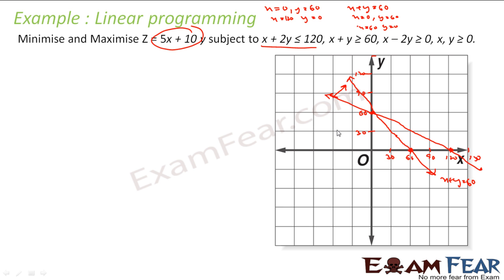Now, whether the region is on this side or that side: put (0, 0). For x + 2y ≤ 120, (0, 0) satisfies since 0 < 120. But for x + y ≤ 60, (0, 0) gives 0 + 0 = 0 which is less than 60, so it does satisfy. The first equation satisfies with (0,0) and the region is on the side containing the origin.